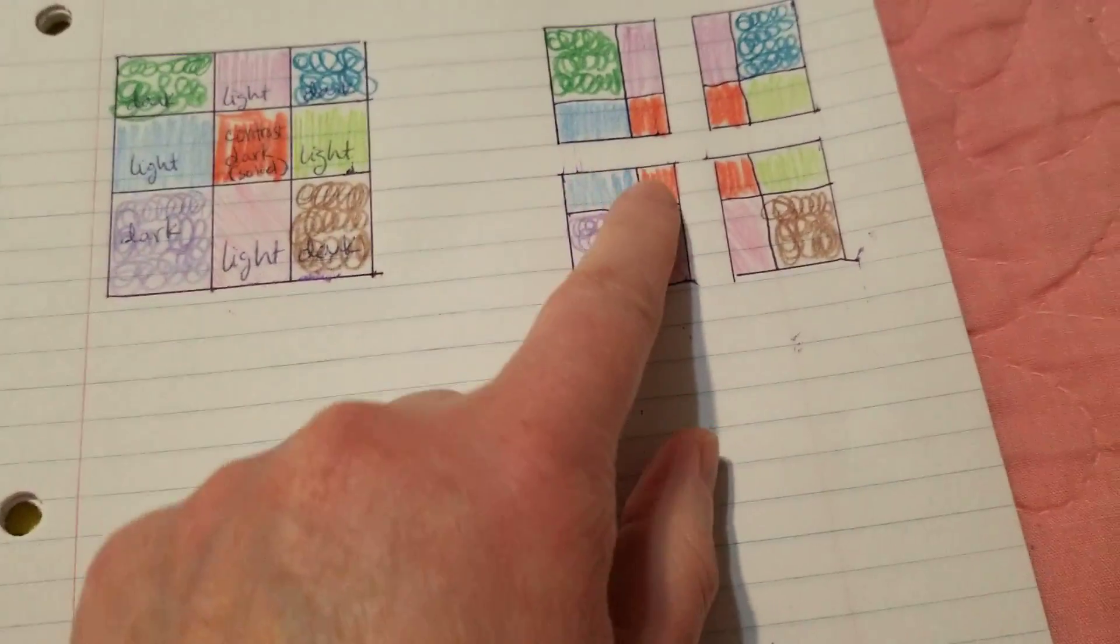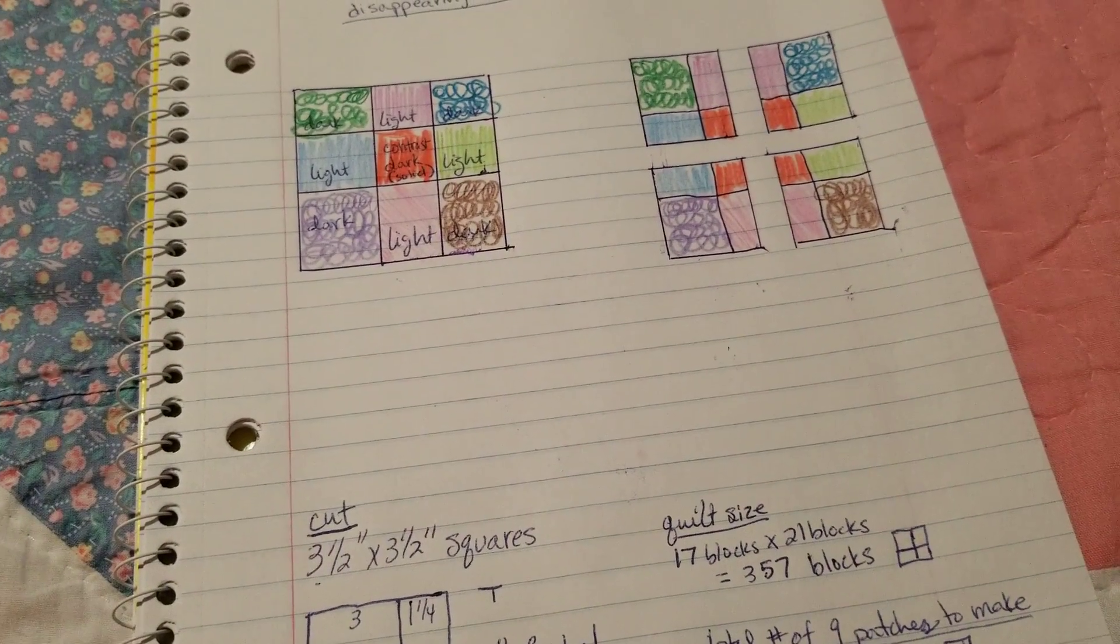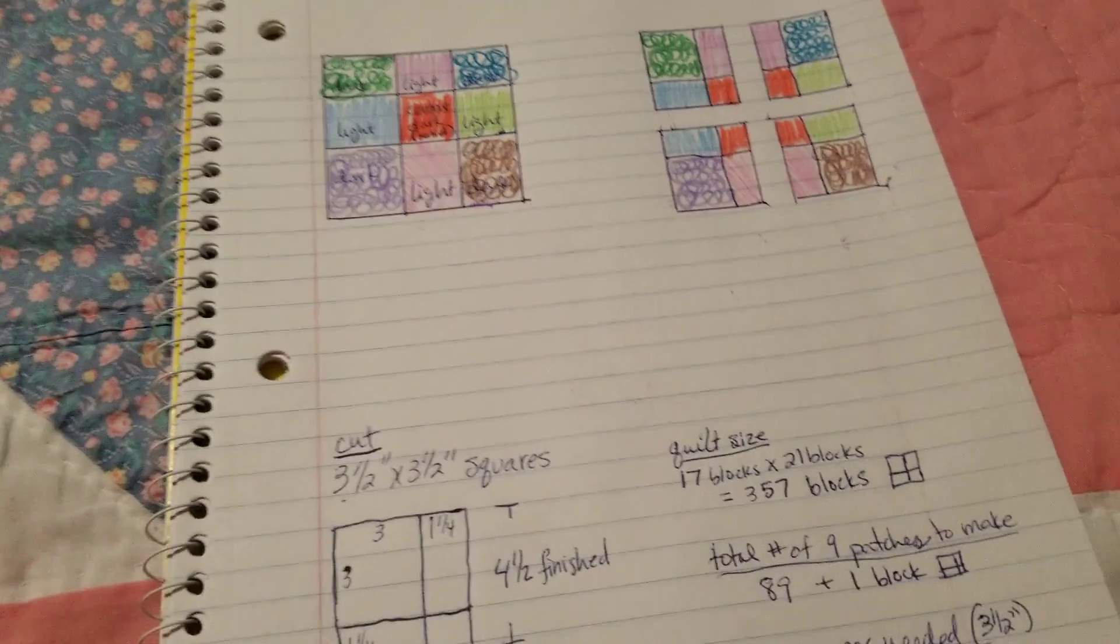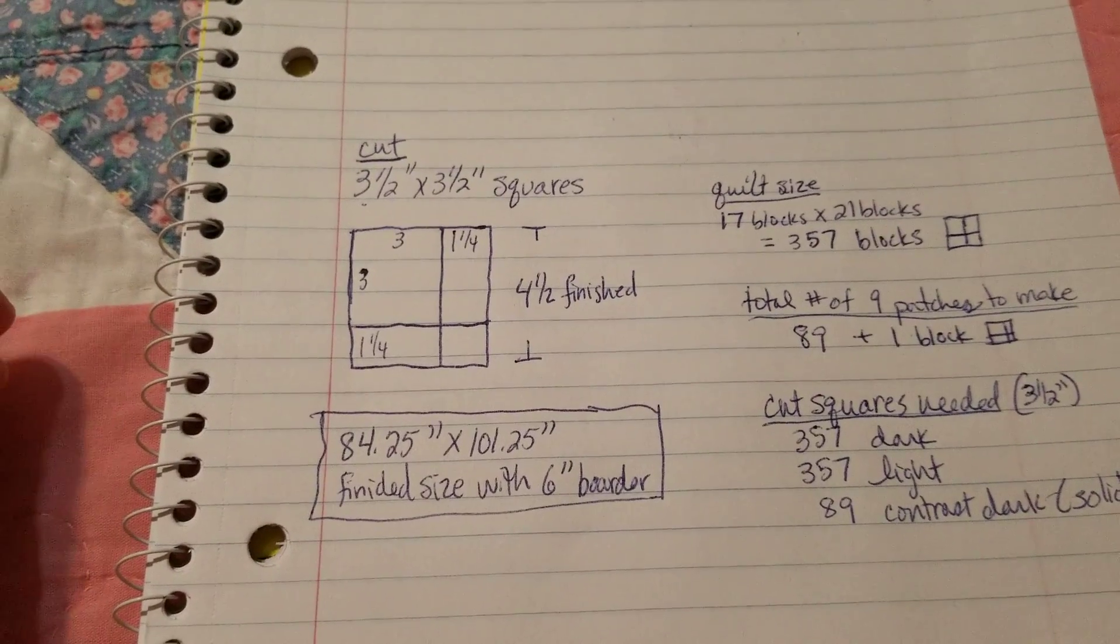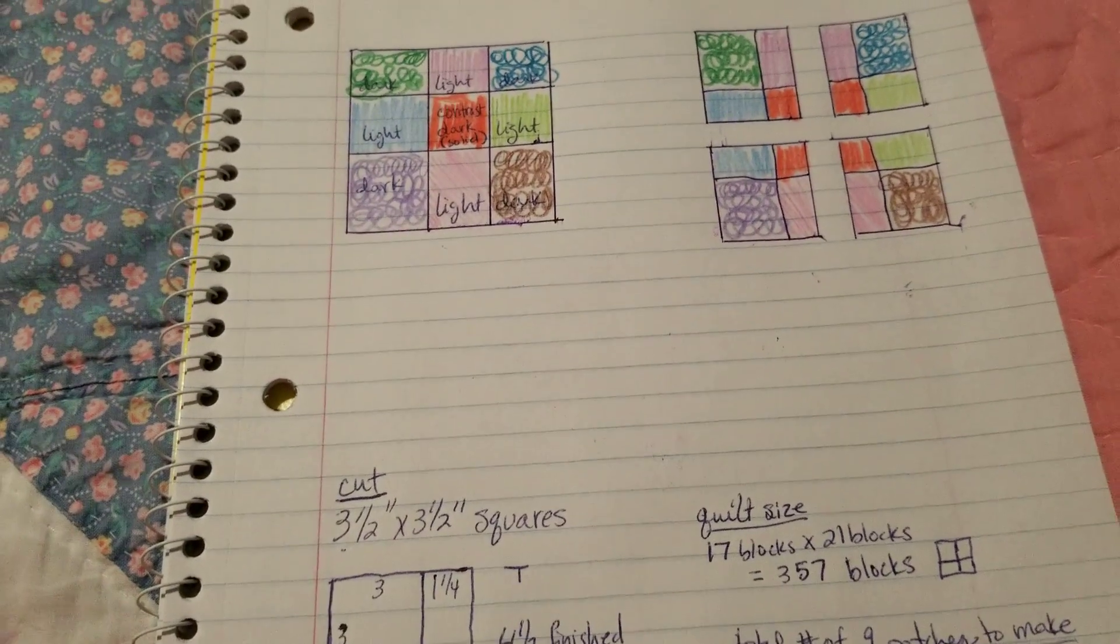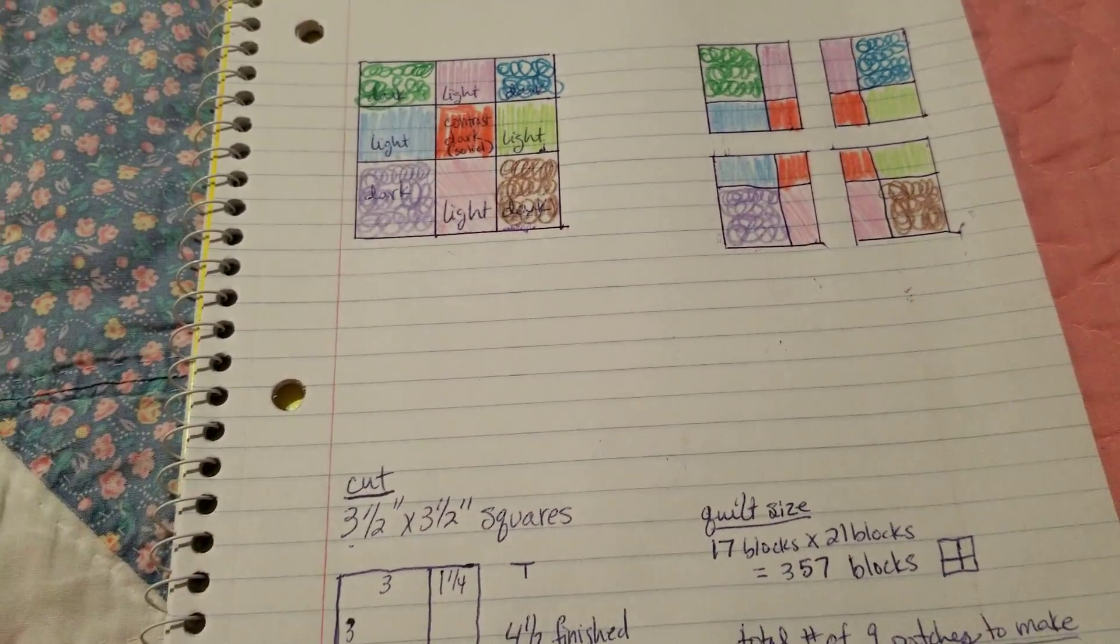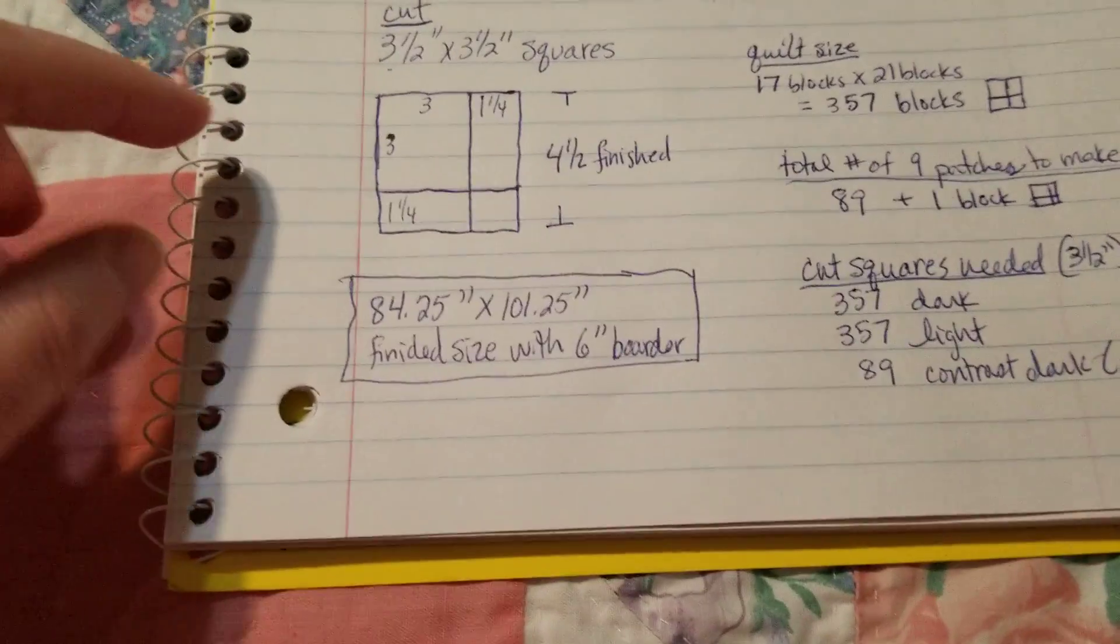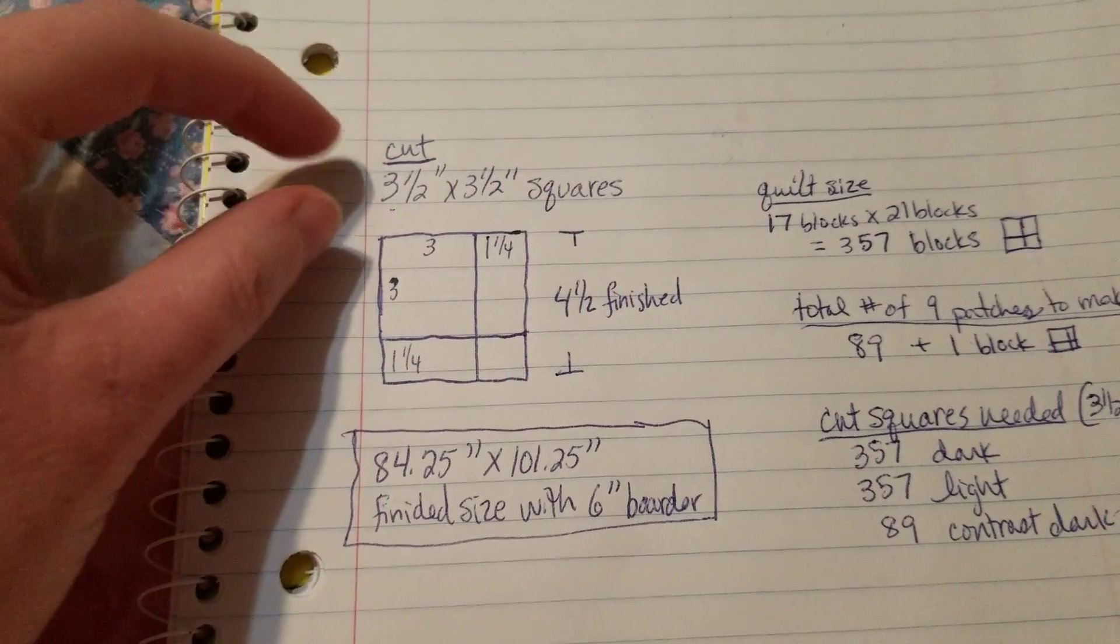I'm going to count this as one block. A lot of people are using those pre-cut five-inch squares to make these. I'm not going to do that—I'm going to cut my own. I decided to go on a lot smaller scale than I've seen a lot of people doing this block, because you could start with a 10-inch block if you wanted and it would go really fast. My squares, I'm going to start with a three and a half inch square.